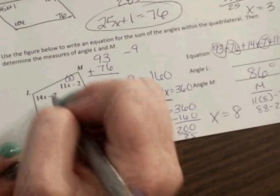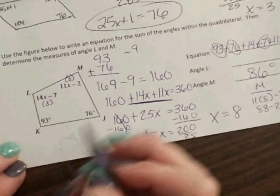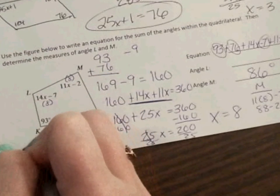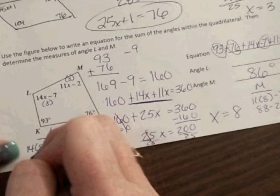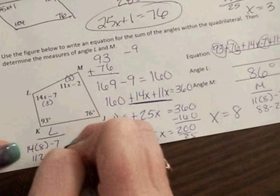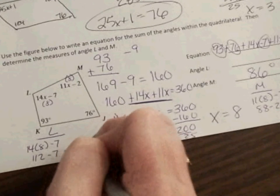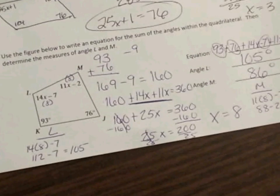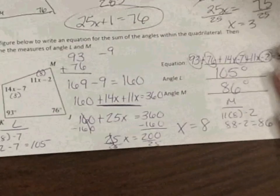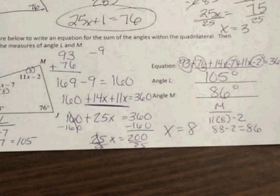If I come over here, same thing. I'm going to plug 8 in here. So for L, I have 14 times 8 minus 7. 14 times 8 is 112. So 112 minus 7 is 105. So angle L is 105 degrees. And make sure you put the degrees because we are talking about angles. Come to class with any questions you might have.